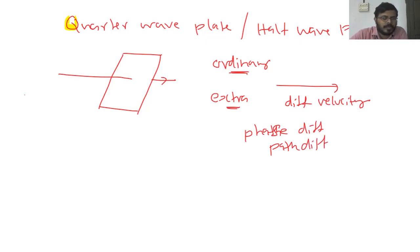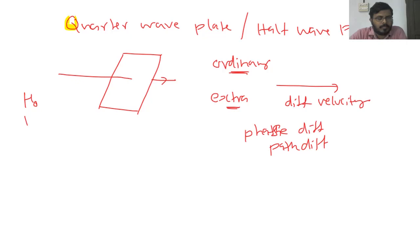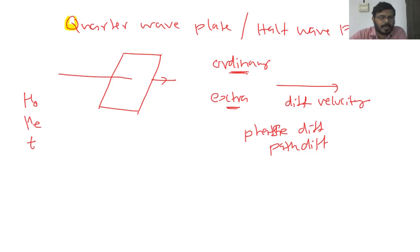Let us take μO as the refractive index of the ordinary ray and μE as the refractive index of the extraordinary ray, and let us take the thickness of the crystal as T.